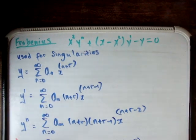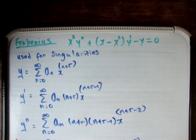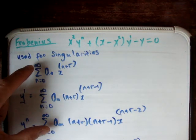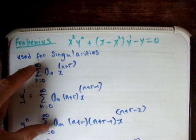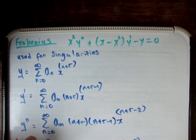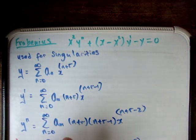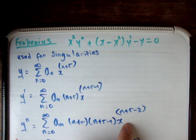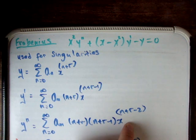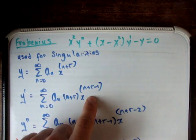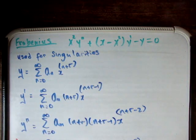The next thing we need to do is solve this as we would have solved any other power series solution. So we need to make sure that all of our terms start at the same point — in this case they do, because we have n equal to 0 going to infinity. However, their powers don't. For example, n plus r minus 2 is not equal to n plus r minus 1, is not equal to n plus r.